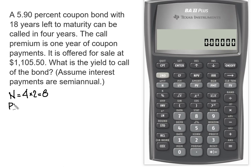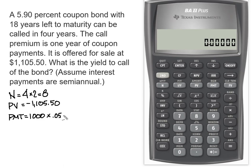The present value is what it's offered for sale today, so that's easy — we're going to put that in as negative $110,550. We have coupon payments, so we have to calculate our payment: $1,000 face value times 5.9%, divided by two for semi-annual payments. Annually I get $59, divided by two gives me $29.50 as my payment.